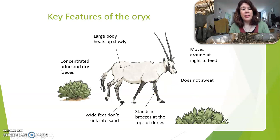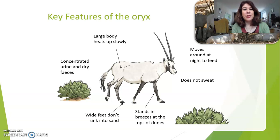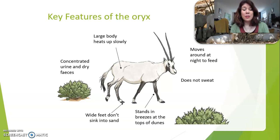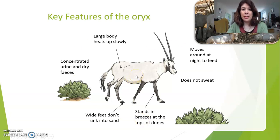The oryx also has concentrated urine — meaning very little water in its urine — and dry feces, so it doesn't lose water. All of these adaptations together are a great example of how an animal can adapt to a desert habitat.